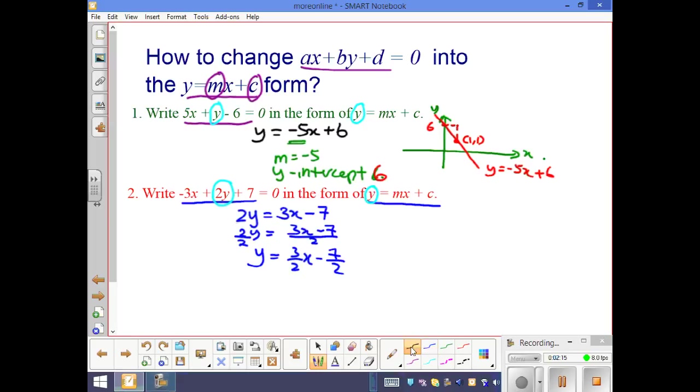That is, in this case, the gradient here is 3.5, and the Y-intercept is negative 7 over 2.